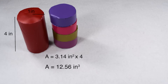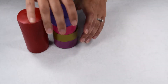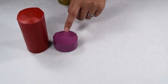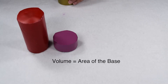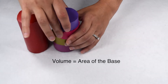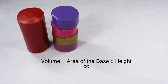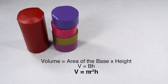Volume is a three-dimensional measurement and we represent it to the third power and read it as cubic. Let's look at what we did in the equation. First, we found the area of the base, then we multiplied it by the height of the cylinder. So volume equals area of the base times the height, or big B times H. This is the same general equation we had for volume of a prism, but this time big B is the area of a circle. Therefore, for a cylinder, we can specifically have volume equals pi times radius squared multiplied by our height.